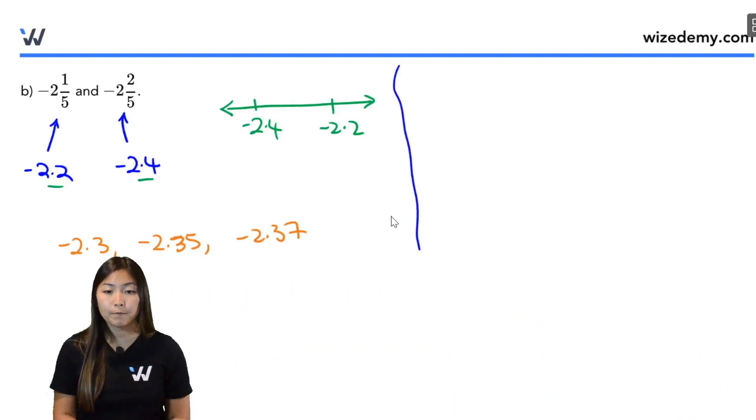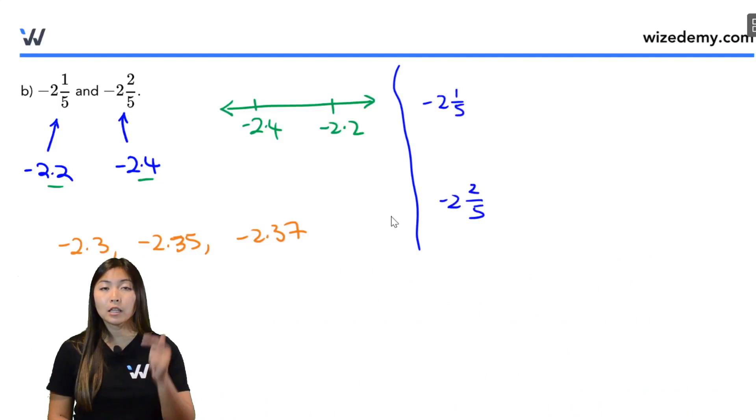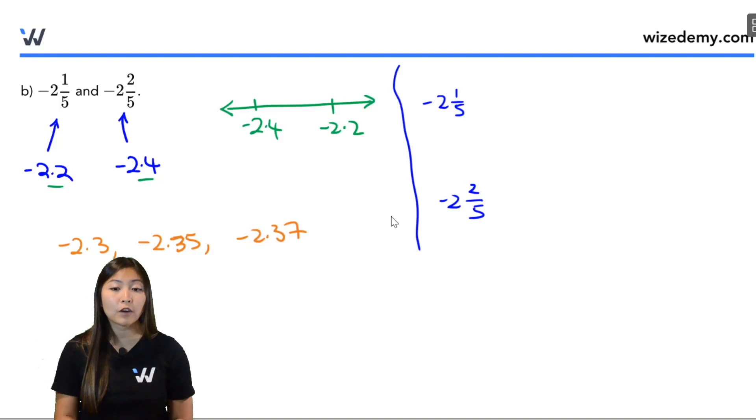Now let's move on to the fraction part. Rewrite your two fractions and pick a number and multiply the top and bottom of each of these fraction parts by the same number. So again I'm going to pick the number 10 because multiplying by tens is super easy.